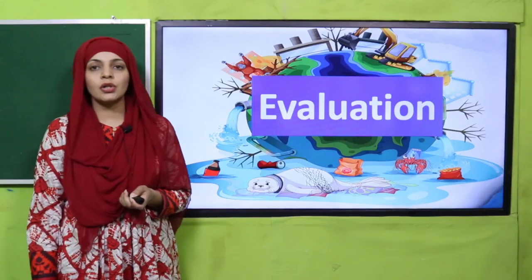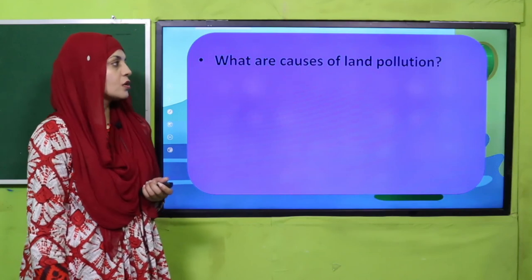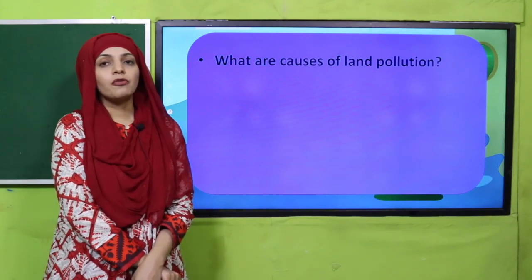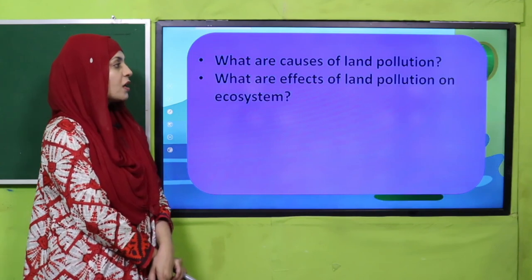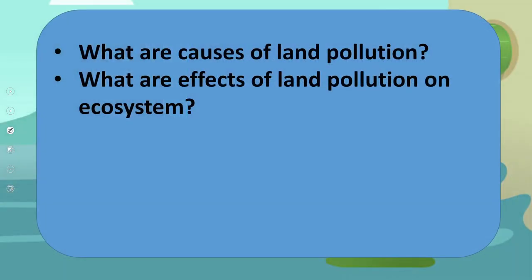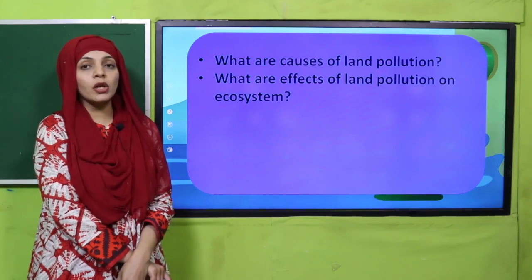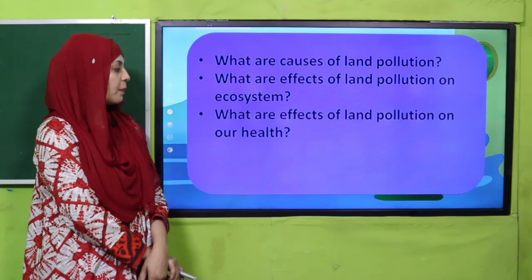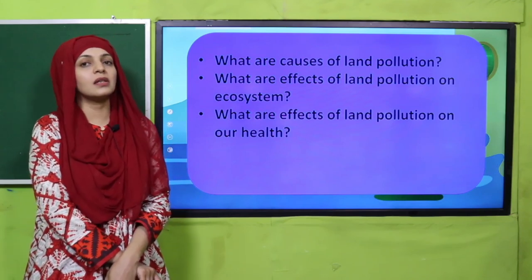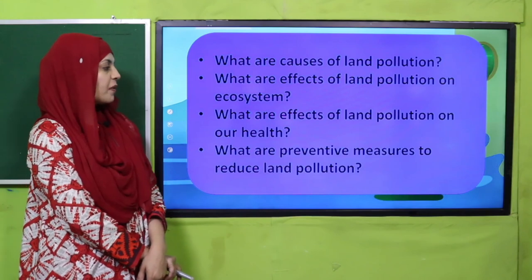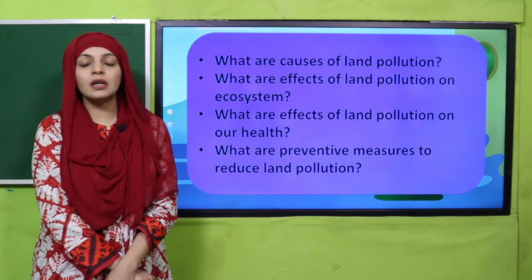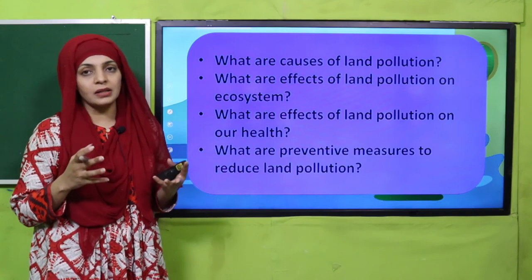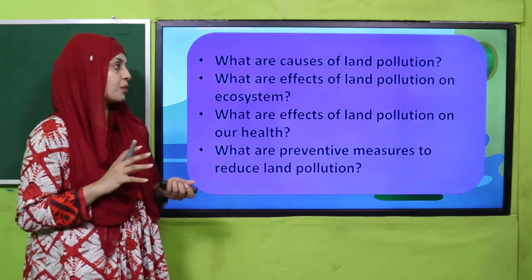Now is the time for evaluation. What are the causes of land pollution? Spraying pesticides, dumping of garbage from factories and homes — they all cause land pollution. What are the effects of land pollution on the ecosystem? It causes infertility of soil, soil erosion, and deforestation, so the ecosystem becomes imbalanced. What are the effects on our health? It causes diseases like dysentery, skin diseases, and fever. What are preventive measures? Plant more trees, treat waste from factories so it becomes less toxic, and recycle things to reduce garbage and pollution.